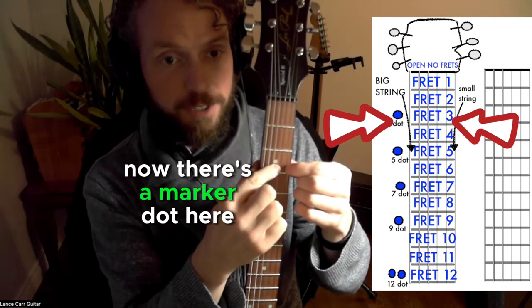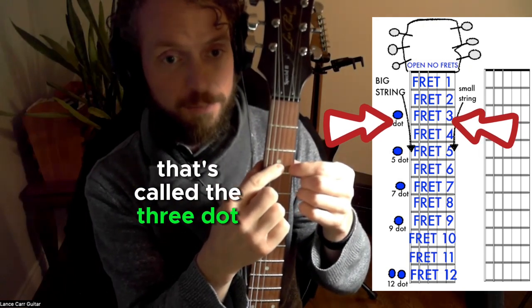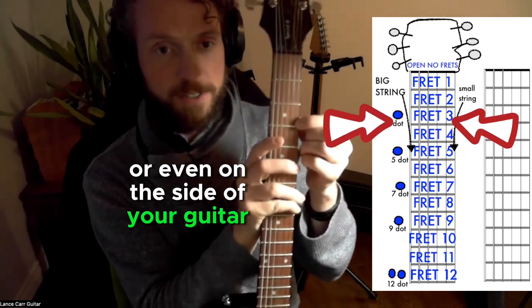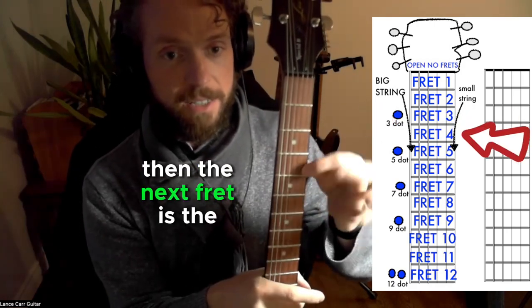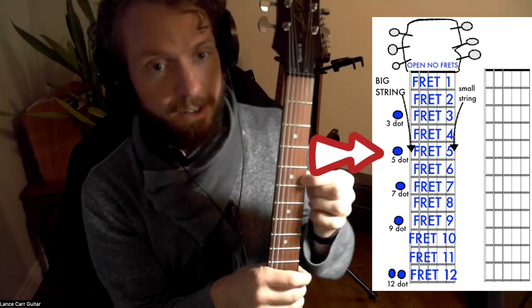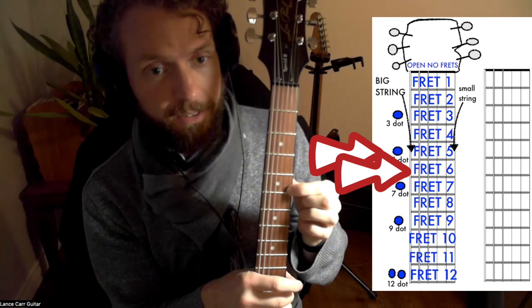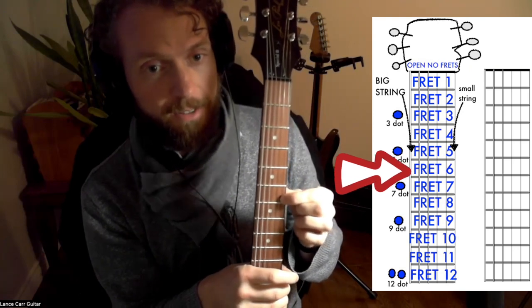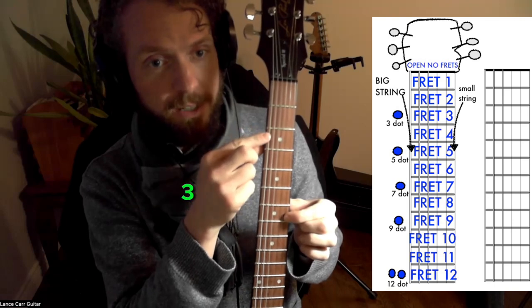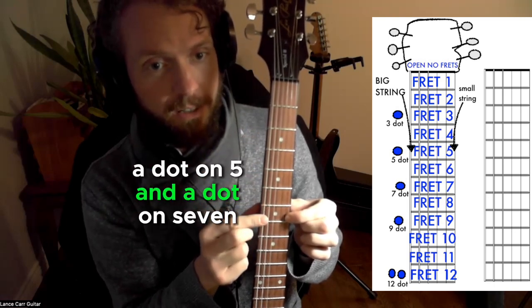Now there's a marker dot here, that's called the three dot. You might find it on the front or even on the side of your guitar sometimes. Then the next fret is the fourth metal fret, the fifth metal fret, the sixth metal fret, the seventh metal fret. And you notice we had dots on three, a dot on five, and a dot on seven.